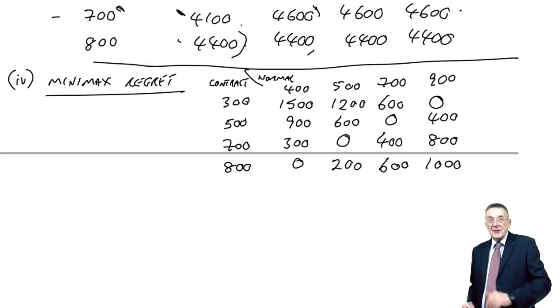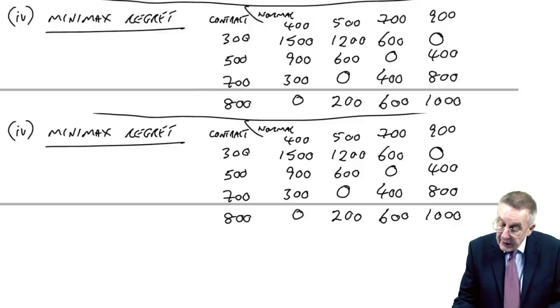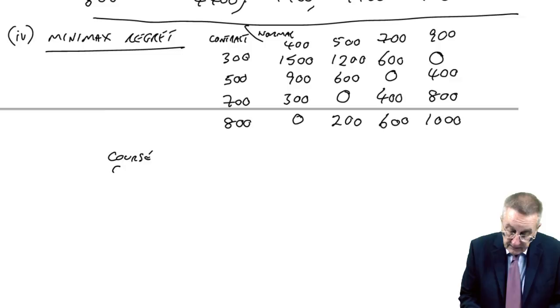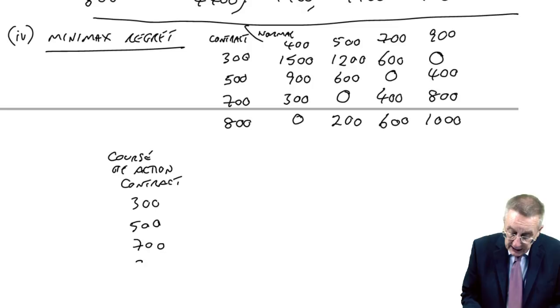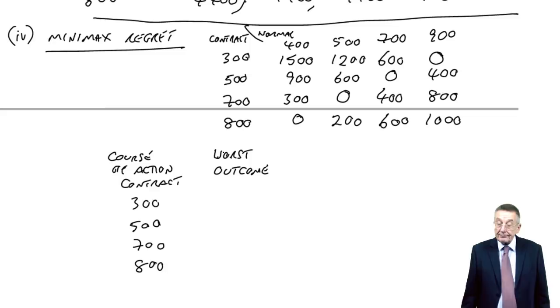Now, let's make the decision. And the decision, for each course of action, which here is the contract size, 300, 500, 700, 800, we choose the worst outcome. And the worst outcome, because these are now losses, costs, regrets, the worst outcome is the highest, so the maximum regret.